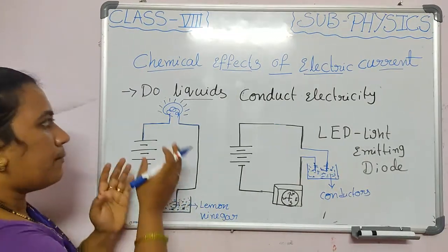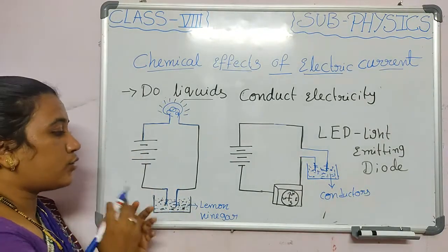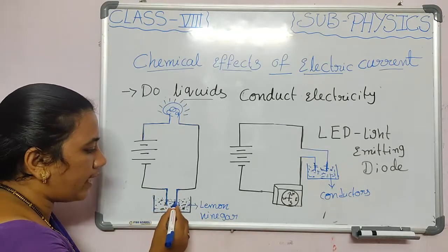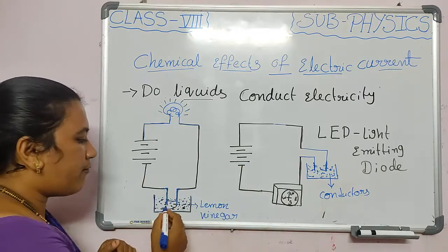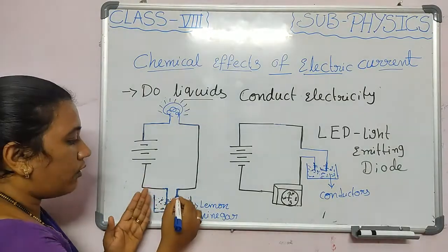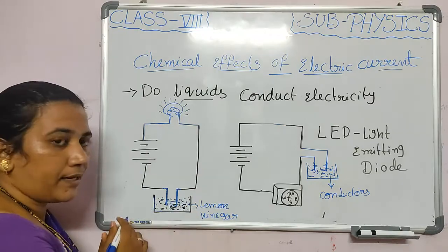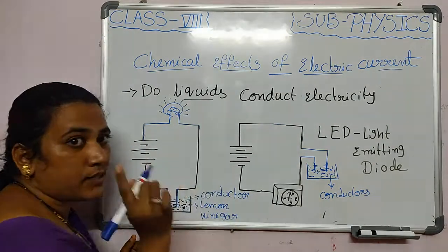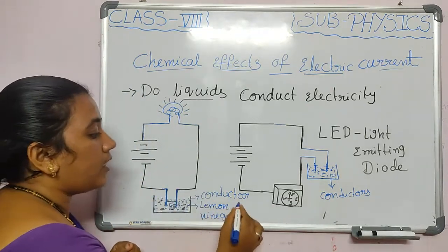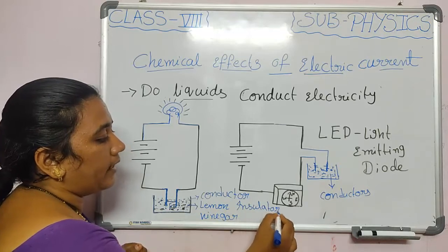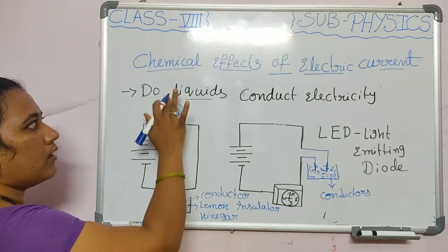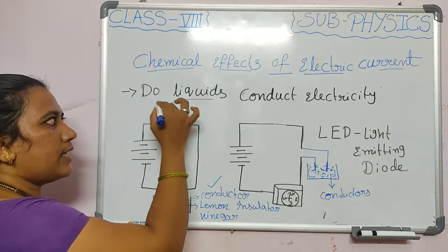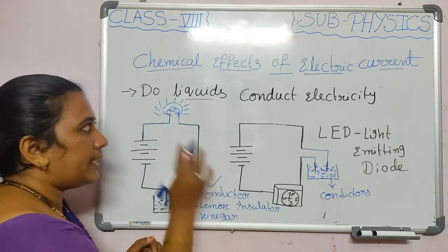Before testing, we confirm the bulb and battery are working. The wire distance in the liquid should not be too long or too short — keep a minimum of one centimeter between them. When we insert the two wires into the liquid, if it is a conductor, we observe that the bulb will glow. If it is an insulator, the bulb does not glow.